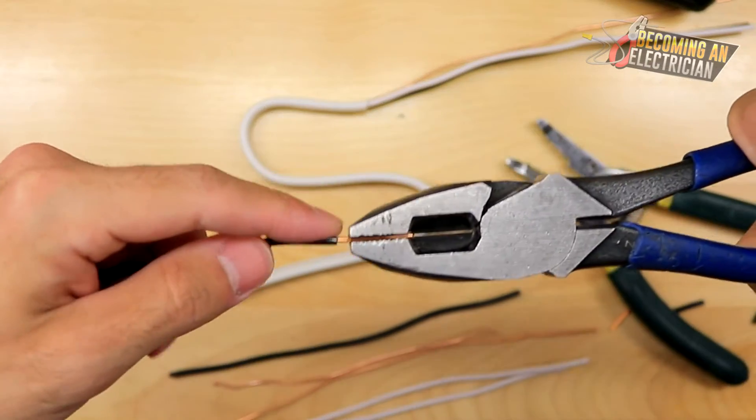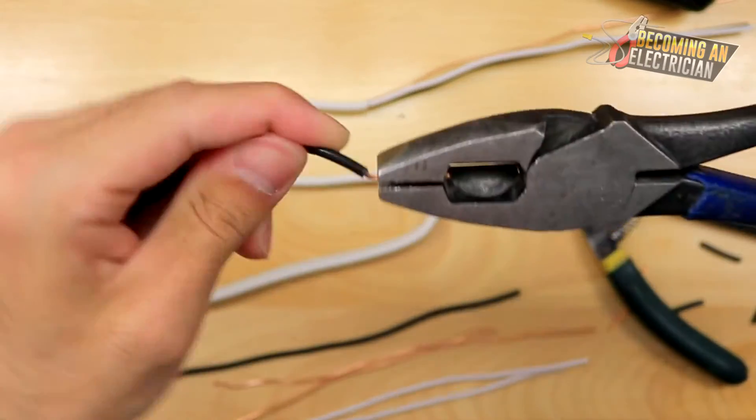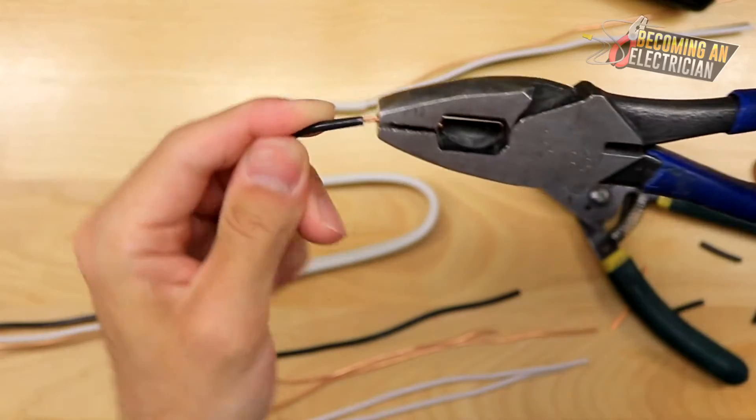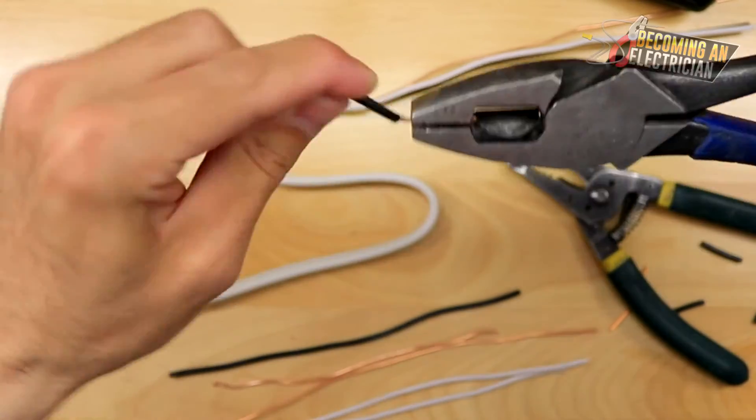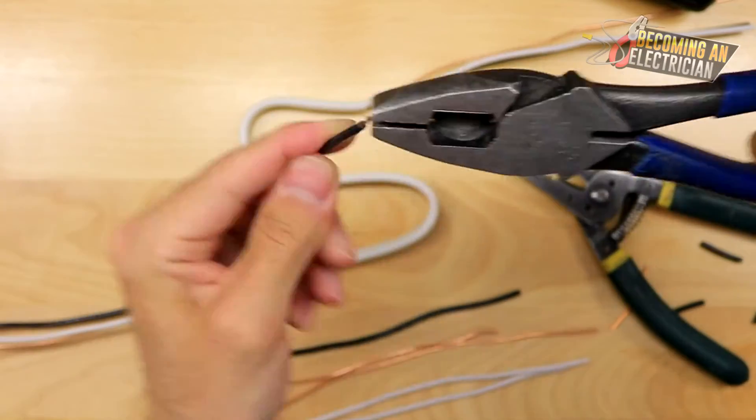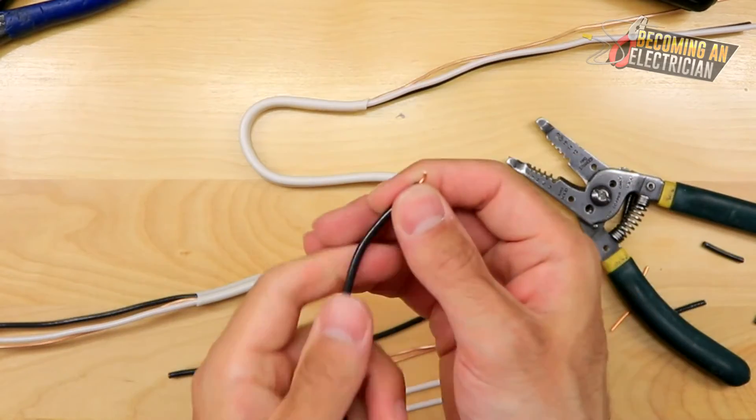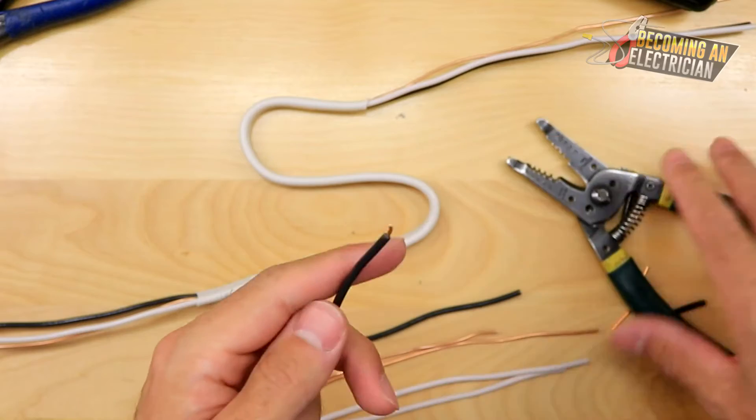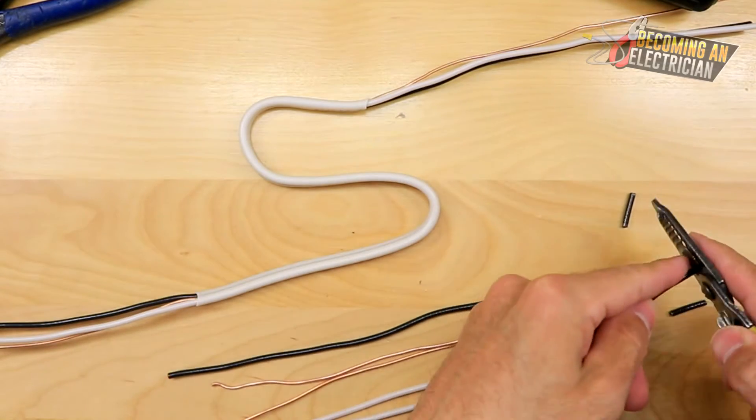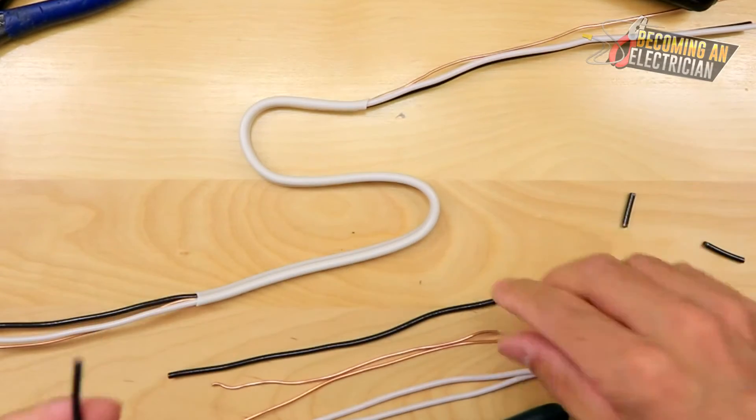Now again, this was a clean strip. I was not aggressive on it, and let's try to do the bend. Before it was nine. So one, two, three, four, and I'm being very aggressive. Five, six, seven, eight. So again, that's just showing you guys that if you don't score the wire, your wire is much stronger, and as an electrician, it's all about the integrity of the wire.